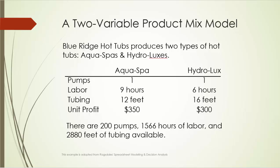Consider a hot tub producer named Flurridge. It produces two types of hot tubs: Aquaspark and Hydrolysis. The basic information about these two products is summarized in this table. Each Aquaspark needs one pump, 9 hours of labor, and 12 feet of tubing, yielding a profit of $350. Each Hydrolysis needs one pump, 6 hours of labor, and 16 feet of tubing, yielding a profit of $300.